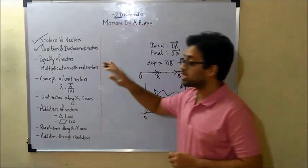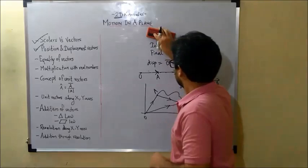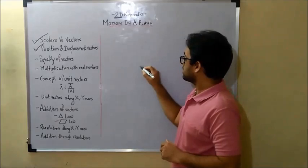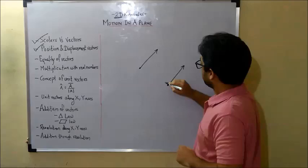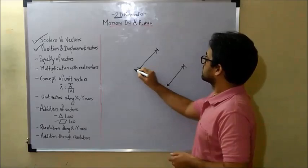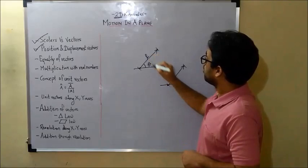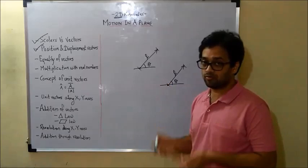Now let us consider the equality of two vectors. The terminology is simple: if two vectors have the same magnitude and the same direction — that is, the same angle — then the vectors are called equal vectors.